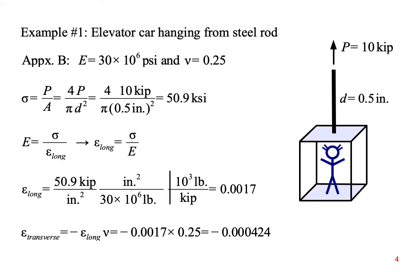We know from chapter 2 that Young's modulus is stress over strain, and in this case it's longitudinal strain. Rewrite the equation to solve for strain, and we get a longitudinal strain of 0.0017. Now we can use Poisson's ratio to find the transverse strain, which works out to minus 0.000424.